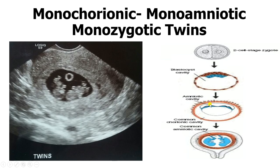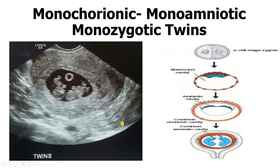Then you have the monochorionic monoamniotic form of twinning, which occurs during the second week of development when the bilaminar disc splits into two. By the second week the amniotic sac has already formed, so what splits is only the epiblast. The epiblast splits and forms two independent fetuses who share the same amniotic sac. On ultrasound, you get two independent twins sharing the same amniotic sac and the same placenta.